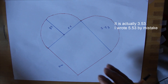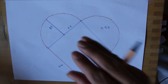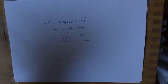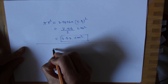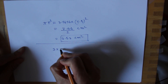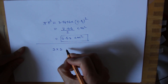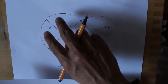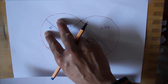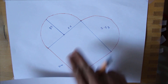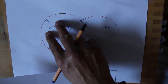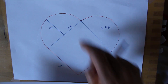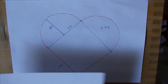Now I can calculate the surface area of this square, where the side length is 3 cm. The surface area of the square is side length times side length: 3 times 3 equals 9 centimeter squared. Now I have the surface area of this half circle, that half circle, and this square. So if I make a summation of this area, that area, and this square, I can get the total surface area of this heart. Is it not simple?